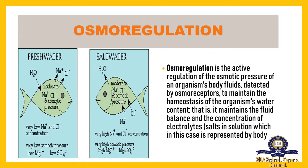Osmoregulation means maintaining the pressure in our body. All organisms have extra minerals. Using the example of a fish, fish can survive in both fresh water and salt water. In fresh water, the sodium chloride level is low, so osmotic pressure is low. In salt water, there is a maximum amount of sodium chloride, so the mineral concentration and osmotic pressure both increase. The body maintains its concentration based on how many minerals it is receiving throughout.